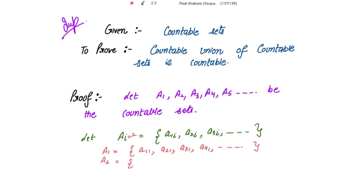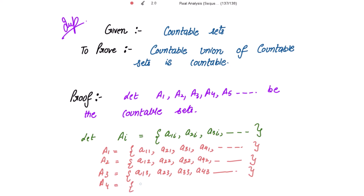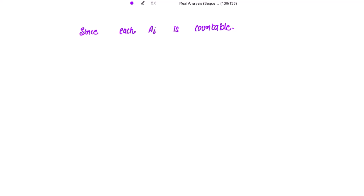Similarly, we can write the elements for A2 by putting i equal to 2: a12, a22, a32, a42, and so on. Then the elements for A3: a13, a23, a33, a43, and so on. Writing one more set, A4: a14, a24, a34, a44, and so on. Likewise, we can write further up to infinity.